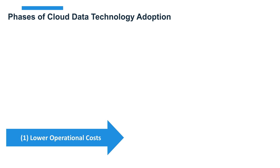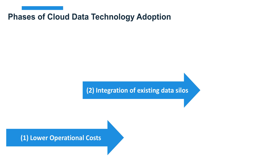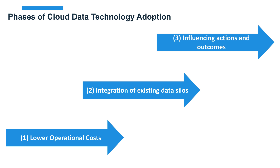The phases of cloud computing data technology adoption include lower operational costs, integration of existing data silos — bringing systems together so they can exchange information intra-cloud or inter-cloud — and influencing actions and outcomes. Ultimately, the ability to take data and put it into use influences the actions and outcomes of the business. The idea is to spotlight information and bring it to those who need it, providing strategic advantages through better insights into what the business is or isn't accomplishing.